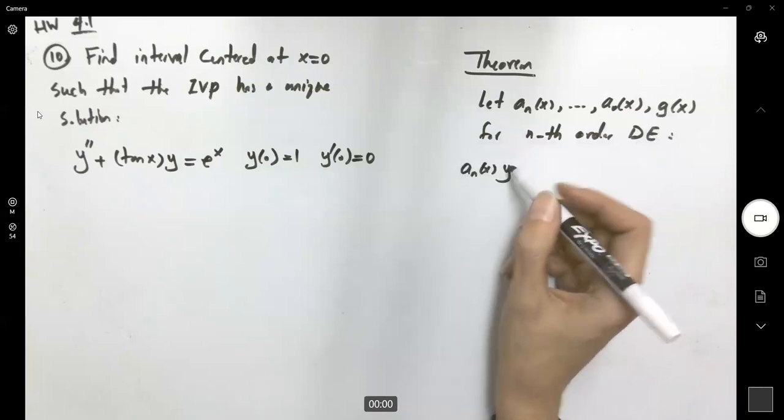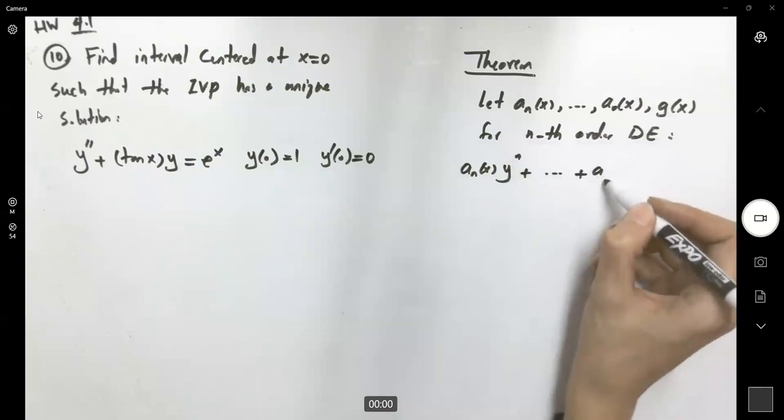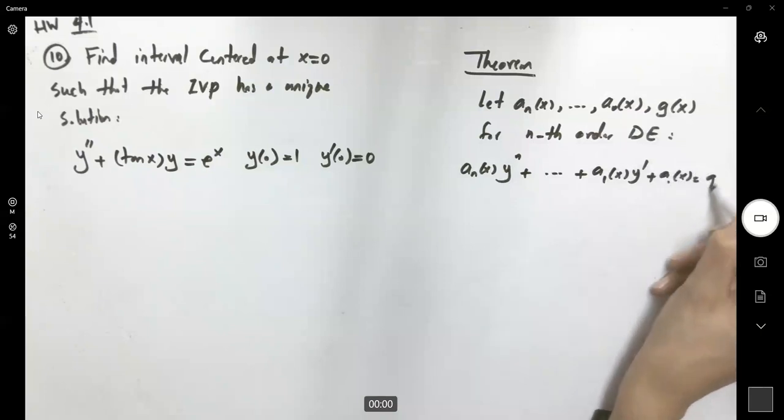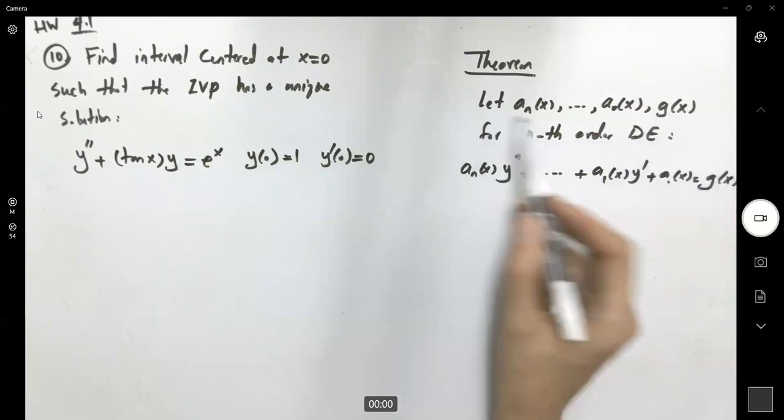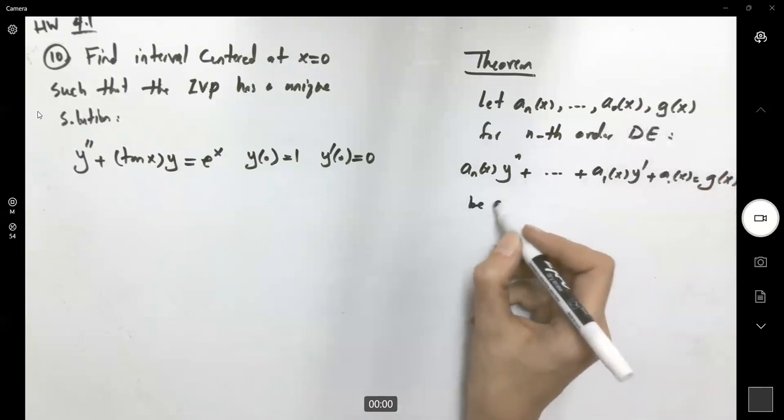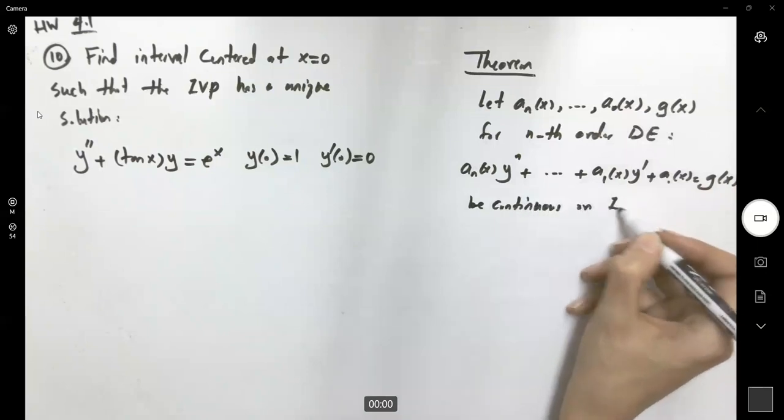The equation is a_n(x)y^(n) plus the middle terms plus a₁(x)y' plus a₀(x)y equals g(x). Let all of these coefficients be continuous